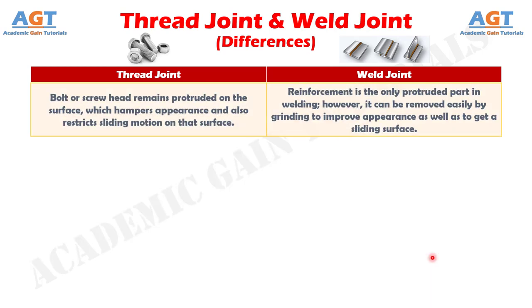Number 5: in thread joint, the bolt or screw head remains protruded on the surface, which hampers its appearance and also restricts sliding motion on that surface. Whereas, reinforcement is the only protruded part in welding; however, it can be removed easily by grinding to improve appearance as well as to get a sliding surface.